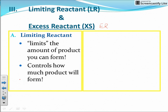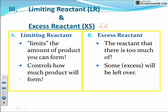The limiting reactant is the reactant that limits the amount of product you can form. It controls how much product will form in the chemical reaction. When the limiting reactant runs out, no more product can be produced. Any other reactants left over are the excess reactants — those are the reactants there's too much of, and there will be some left over.